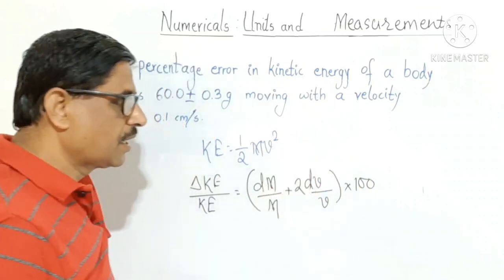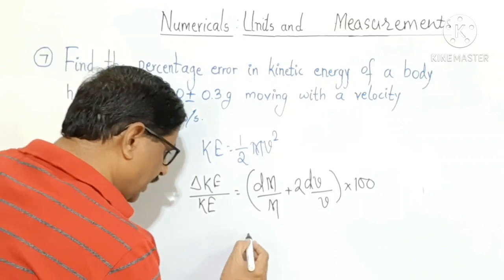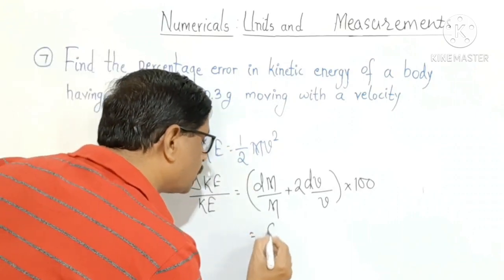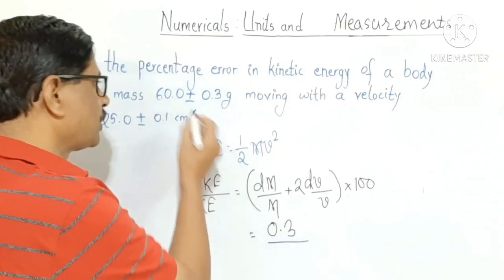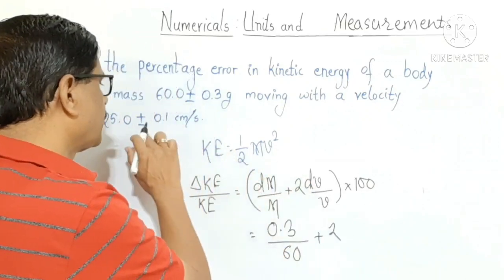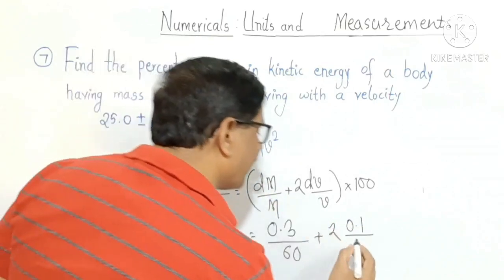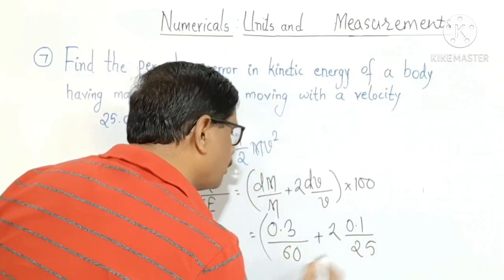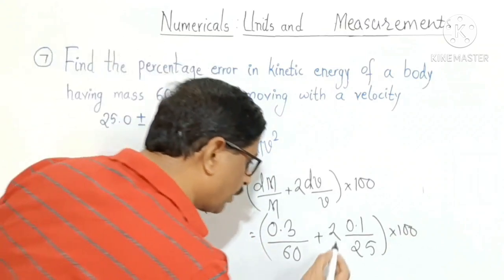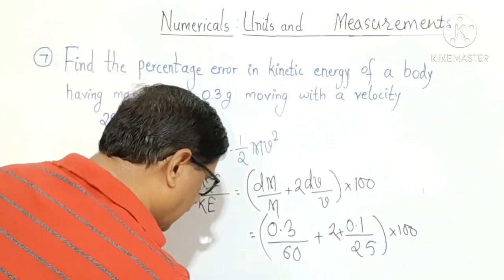Multiplying by 100 gives the percentage error in kinetic energy. The possible maximum error in mass is 0.3, with true value 60; and the error in velocity is 0.1, with actual value 25. So the expression becomes: (0.3/60 + 2 × 0.1/25) × 100.